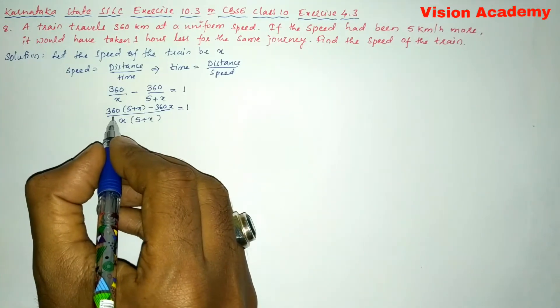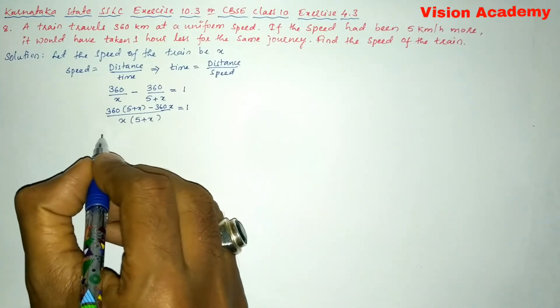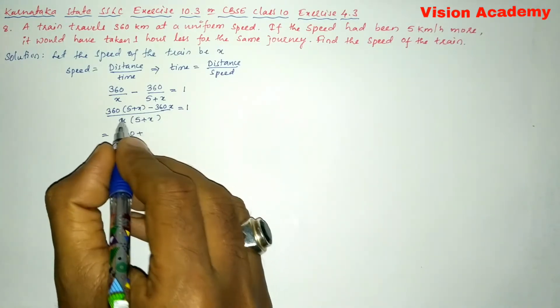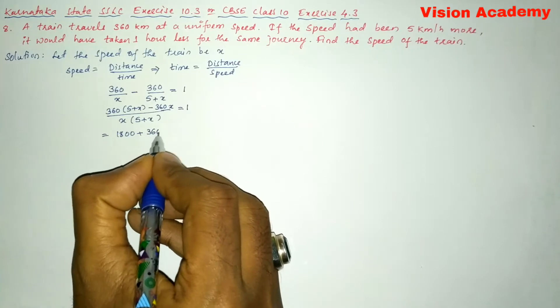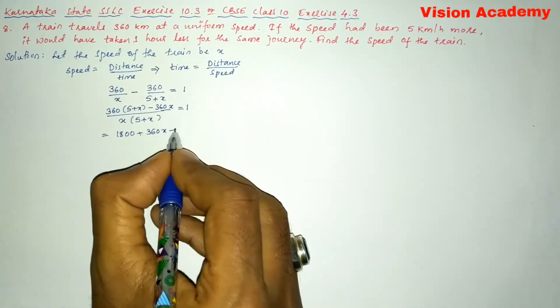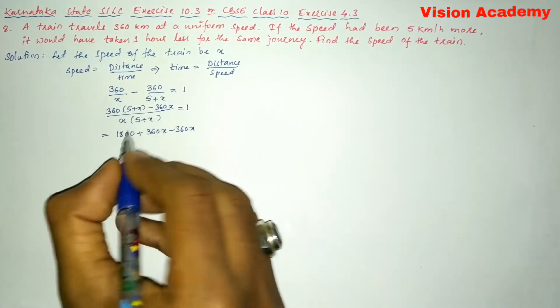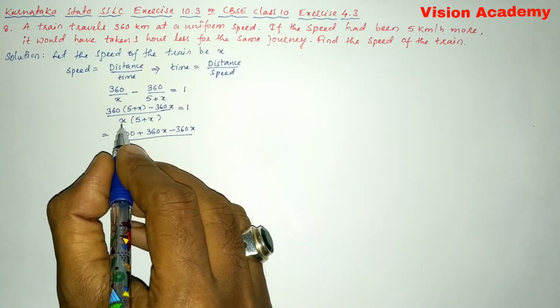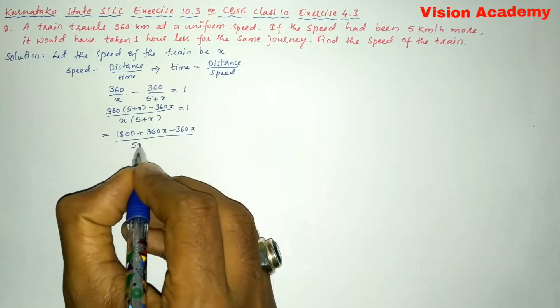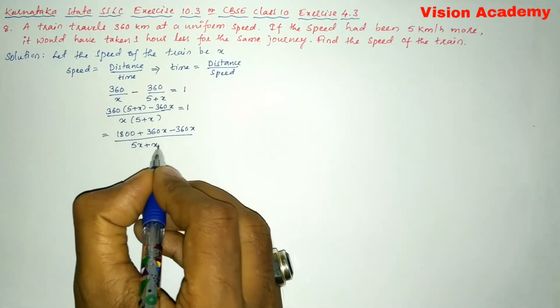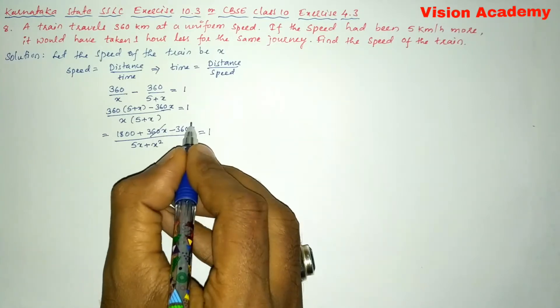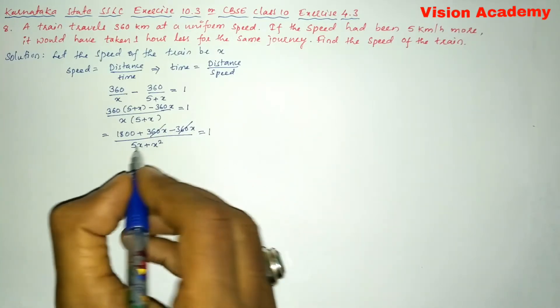Here we are going to get 360 into 5 plus x minus 360 into x is equal to 1. Now let us further simplify. 360 times 5 is 1800 plus 360 into x is 360x minus 360x, whole divided by multiply this x inside of the bracket, 5 into x is 5x plus x square is equal to 1. So here you can see plus 360 and minus 360 will get cancelled.